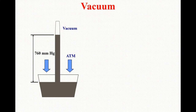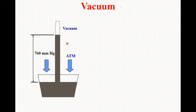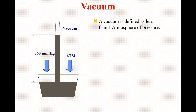You may have seen diagrams like this in earlier courses — basic sciences, MSc classes, or previous physics or chemistry classes. Let's come toward the basic definition of vacuum. A vacuum is defined as a pressure less than one atmospheric pressure.